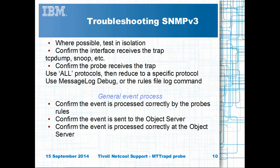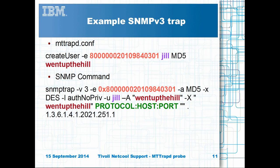If the event is being lost elsewhere after probe processing, review the object server's triggers and event replication if you are in a multi-tier system. The confpath directory holds the configurable mttrapd.conf file. This file holds lines of unique user and password create user statements. For SNMP version 3 traps the engine ID must be given, and this engine ID must be unique to the device. The device must send the trap at the same security level or lower than what is set in the mttrapd.conf file.